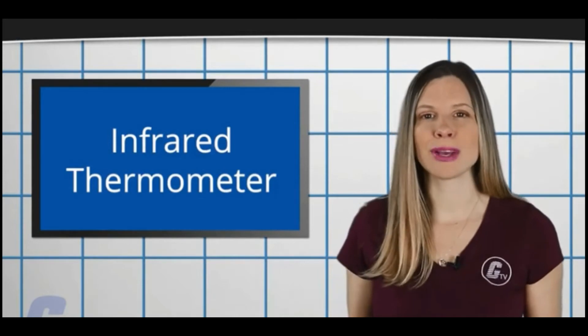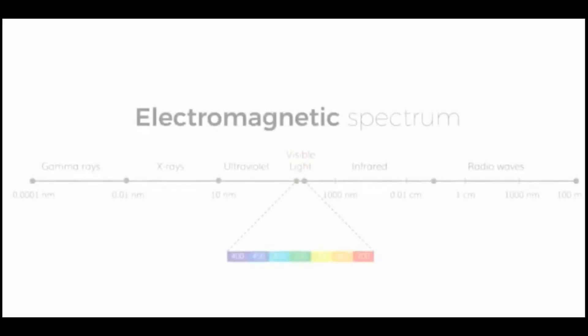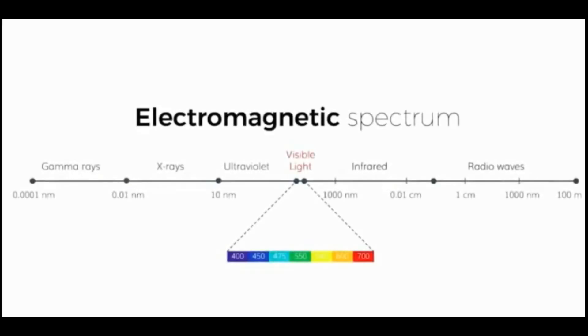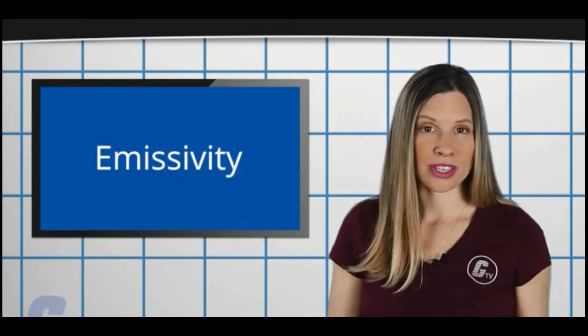If you have ever used an infrared thermometer before, you may have found yourself wondering how this style of measurement is even possible. Infrared is a type of energy that is emitted from the surface of all objects and is part of the electromagnetic spectrum.